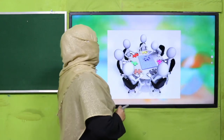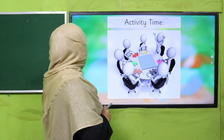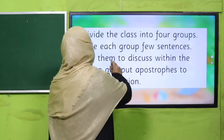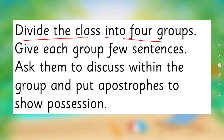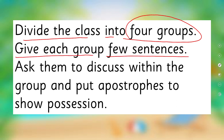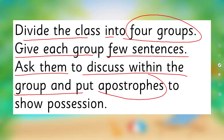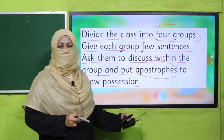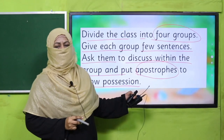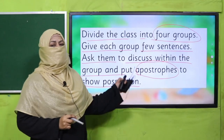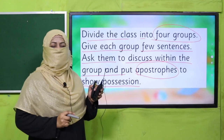Let's practice through an activity. Divide the class into four groups. Give each group a few sentences and ask them to discuss within the group and put an apostrophe to show possession. They will speak the sentences using apostrophe. Pause the video, enjoy this activity, and then come back.